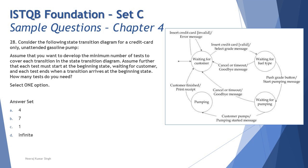Let's jump into the next question about state transition testing. A picture of a state transition diagram is provided. The question says: consider the following state transition diagram for a credit-card-only unattended petrol pump. You park your vehicle, enter values, insert your credit card, define the amount of fuel, and dispense it. Assume you want to develop the minimum number of tests to cover each transition. Each test must start at the beginning state — waiting for the customer — and end when a transition returns to that same state.